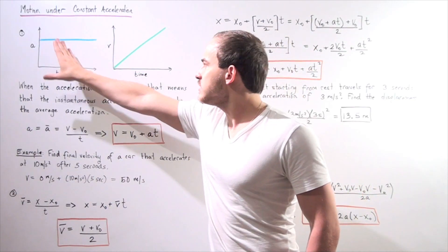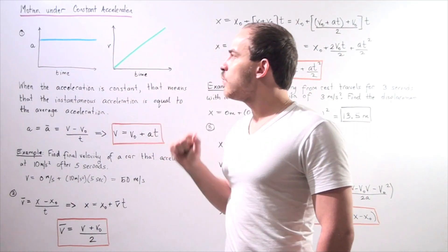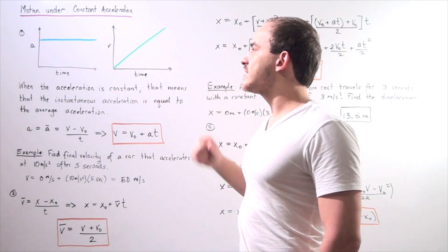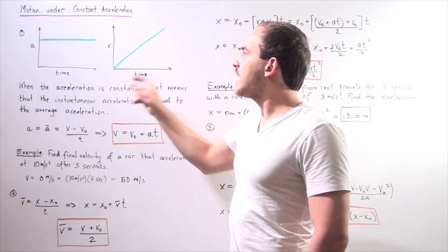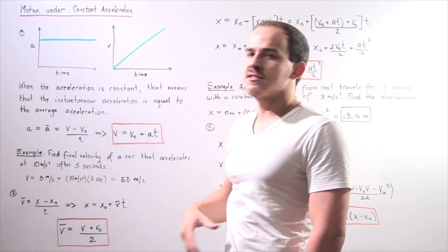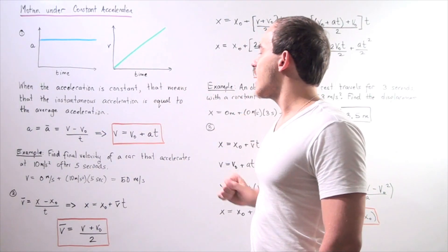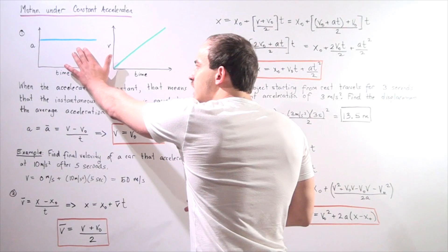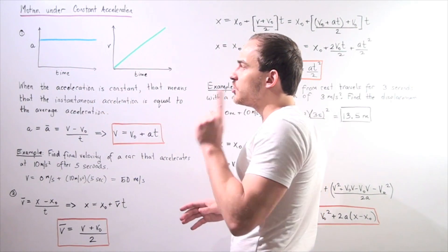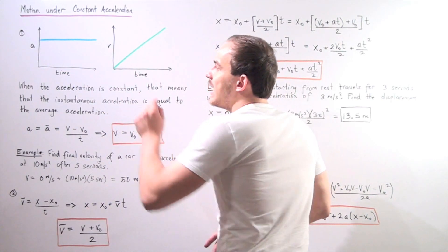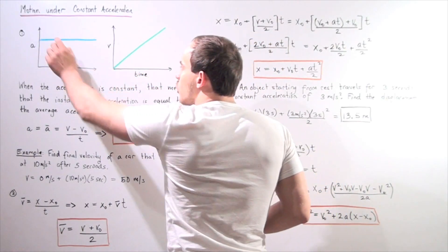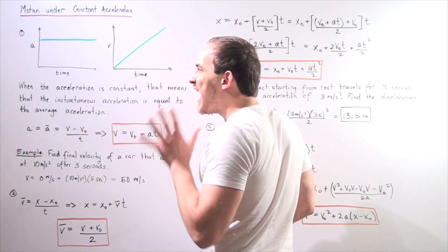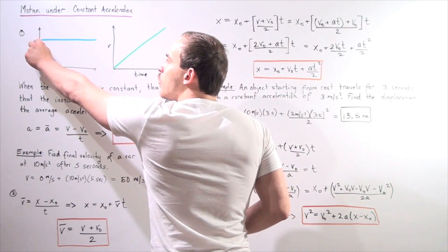Let's look at these two graphs. In graph one, we have our y-axis to be acceleration and our x-axis to be the time. In the second graph, we have our y-axis to be our velocity and the x-axis to be our time. What does this graph tell us about our acceleration? Notice our acceleration is a straight line with a slope of zero. In fact, our acceleration on this graph is constant.